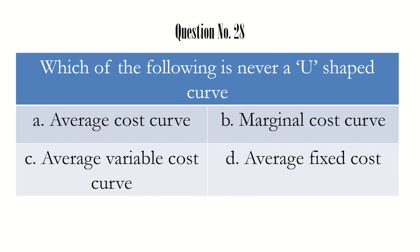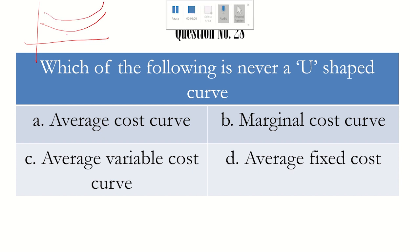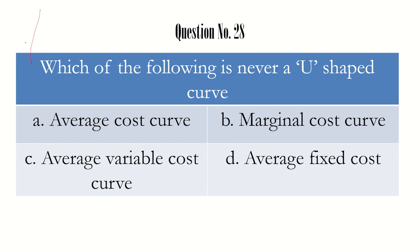Question number 28: which of the following is never U-shaped? The average variable cost curve is U-shaped; the average cost curve is U-shaped; the marginal cost curve is also U-shaped. The average fixed cost curve, however, starts high and keeps decreasing as production increases, going very close to the x-axis without ever touching it, and never rising back up. So the average fixed cost curve is never U-shaped, and that is the answer.